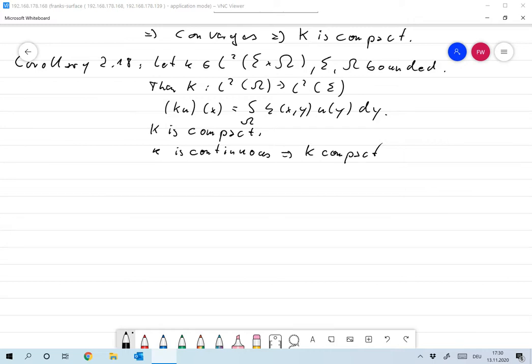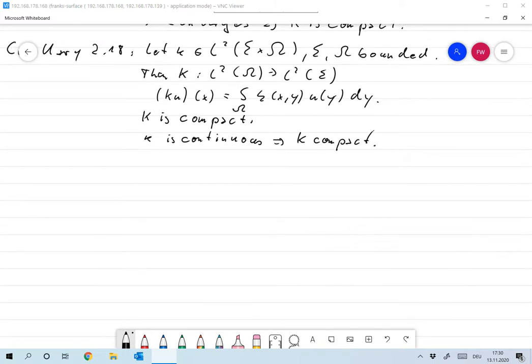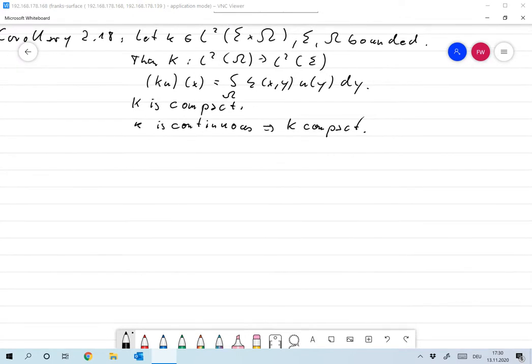Okay, but then still, we have it only for continuous K, so why is that true for K in L2, for small k in L2?